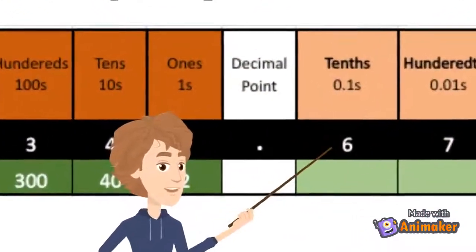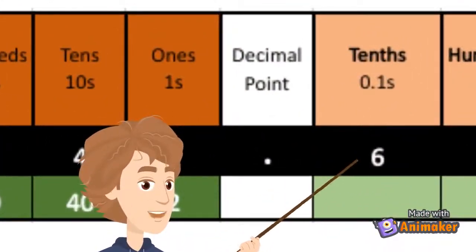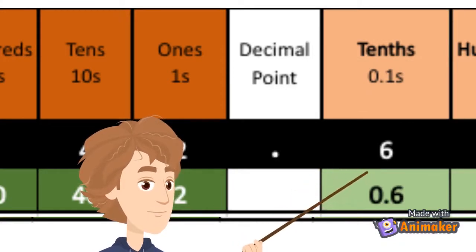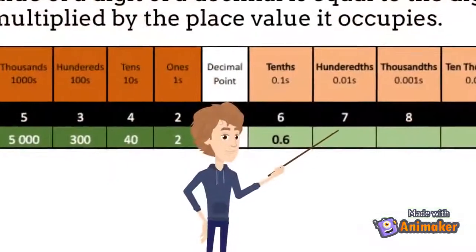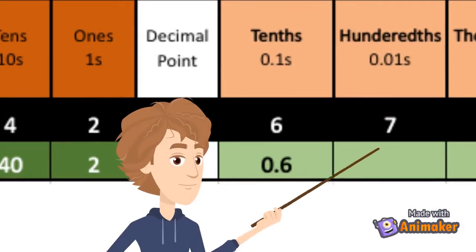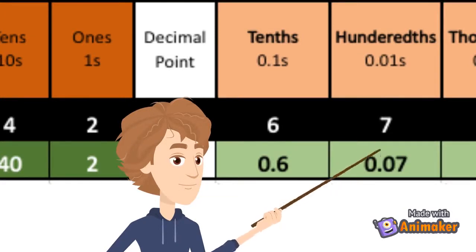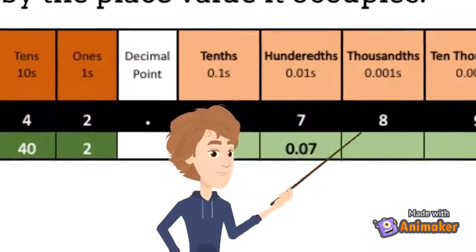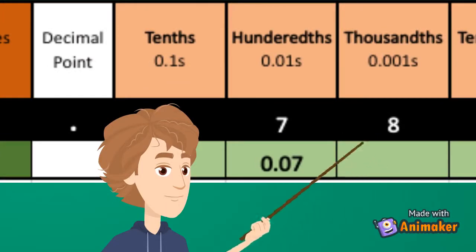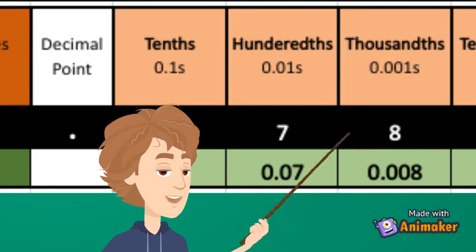The digit 6 is located on the right side of the decimal point and its place value is tenths. To get its value, multiply 6 times 1 tenth. So its value is 6 tenths. The digit 7 is in the hundredths place, so its value is 7 times 1 hundredth which is 7 hundredths. The digit 8 is in the thousandths place. Its place value is thousandths. To find its value, multiply 0.001 times 8, which gives you 8 thousandths, or 0.008.